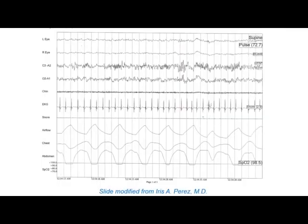This is an example of a polysomnogram. You see eye motion, EEG electrodes to help determine sleep state, chin EMG, electrocardiogram, and often a microphone to listen for snoring. You can see airflow, chest wall motion, and abdominal motion. This is relatively normal: saturation is 98%, there is not much in the way of snoring. This would be a fairly normal polysomnogram.